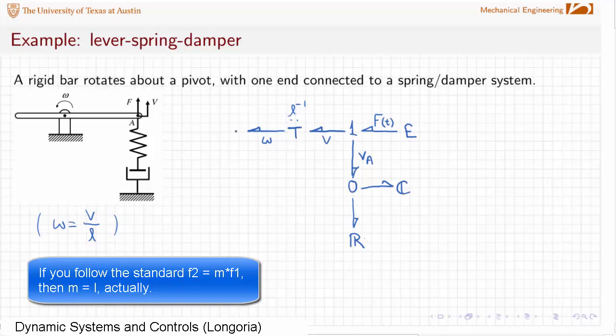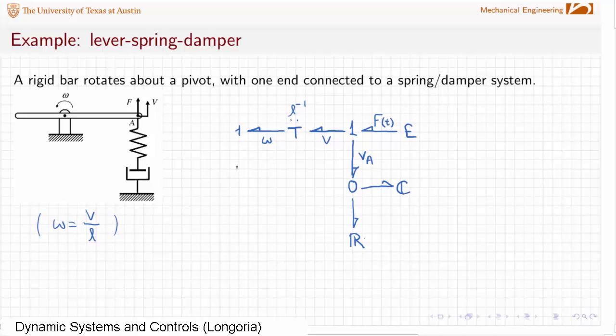Now I'm going to drop a 1 here. Why am I doing that? Because I want to indicate that there's a distinct velocity here, which represents the rotation around this point. And I want to be able to attach elements here. I want to be able to model maybe the friction, and if this has some moment of inertia, I can attach it at this point.